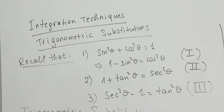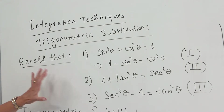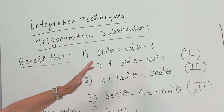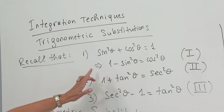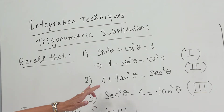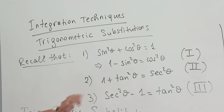First I want to recall these formulas from trigonometry. sin²θ + cos²θ = 1. 1 − sin²θ = cos²θ. 1 + tan²θ = sec²θ. And sec²θ − 1 = tan²θ.